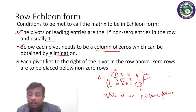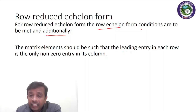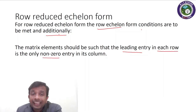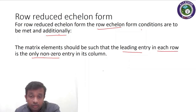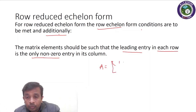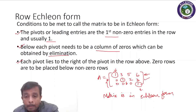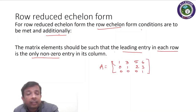Now let us see what the row reduced echelon form is. The row echelon form conditions are to be met, and additionally the leading entry in each row must be the only nonzero entry in its column — that is, the elements above the pivot should also be zero. Going back to the matrix from the previous slide: 1, 3, 5, 6 / 0, 1, 2, 3 / 0, 0, 0, 1.